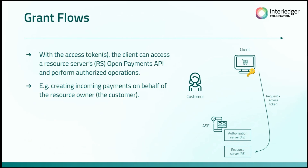Once the client has these access tokens, they can access the resource server and perform authorized operations — things like creating incoming payments on behalf of the customer. Once the client has sent a request along with their access token to the resource server, the resource server is able to check whether this access token is valid and hasn't been forged. It does that by making a call to the authorization server with that access token, asking: did you provide this? Is it legitimate? Is it still valid? Has it been tampered with? Has it expired? Has it been revoked? And it gets all of that information directly from the source.